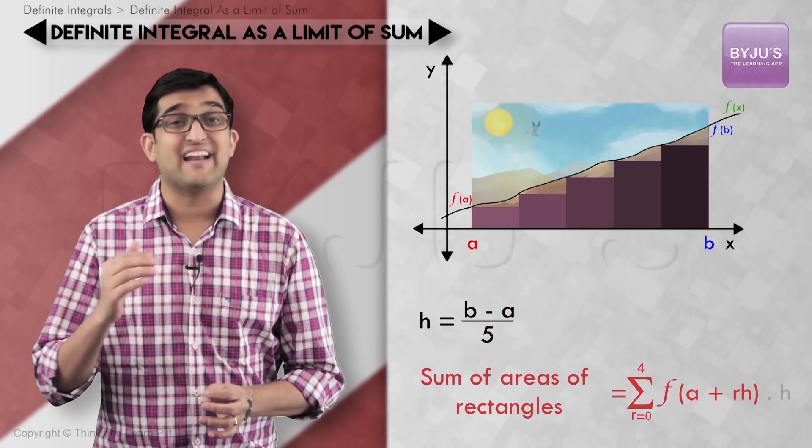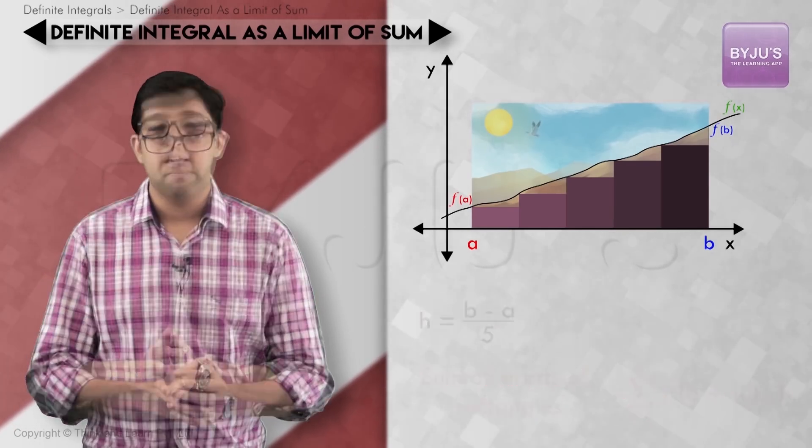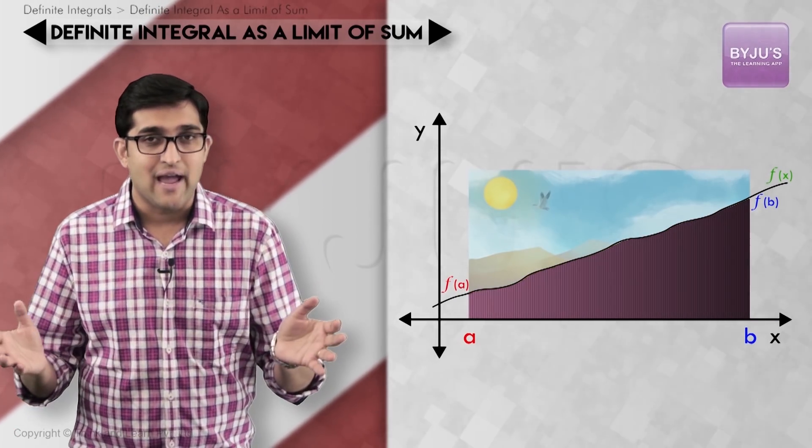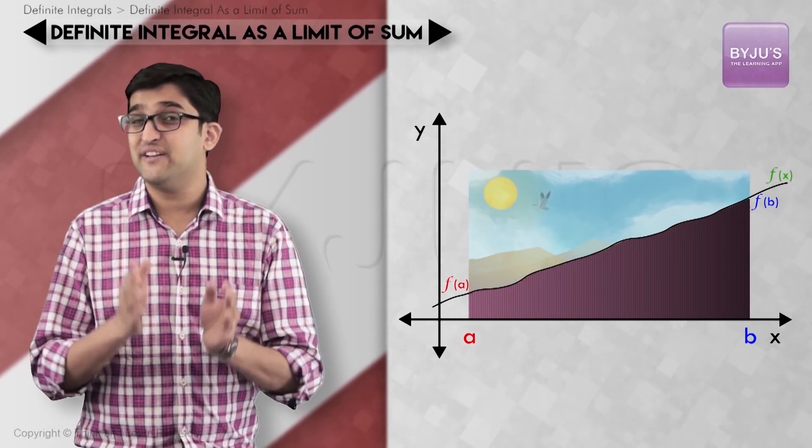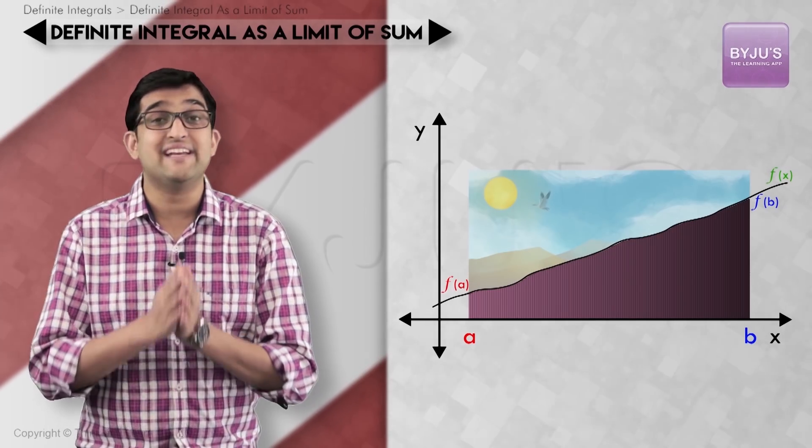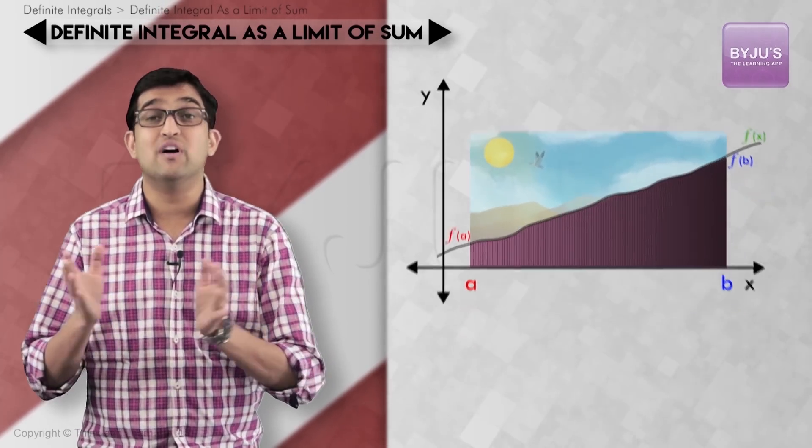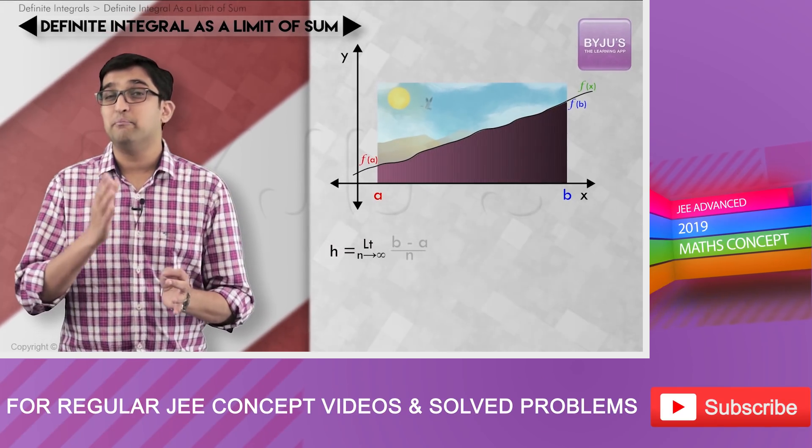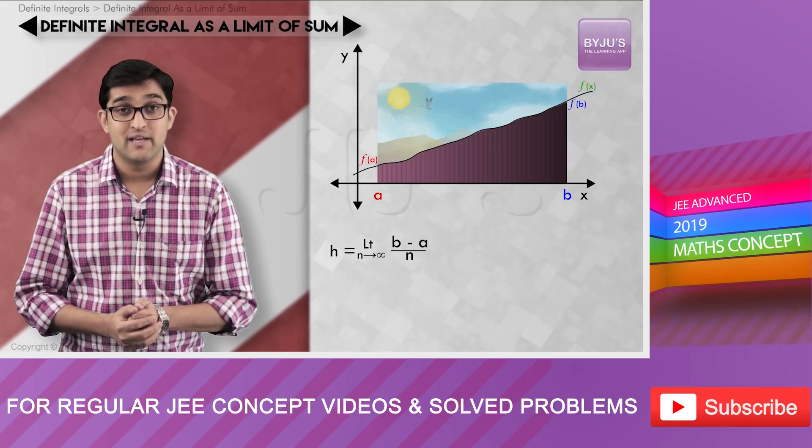Now if we increase the number of rectangles to a large value and reduce their widths to infinitesimally small values or tending to zero, the width of each of the rectangles will work out to h = limit n tends to infinity, (b - a)/n. In this case, the sum of area of all the rectangles put together will equal to limit n tends to infinity, summation r varies from 0 to n-1, f(a+rh) × h.